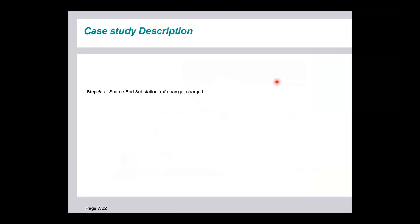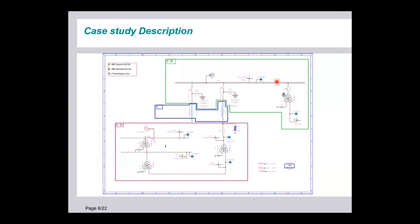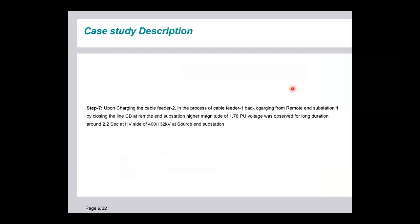The next step: the line CB is already closed. Hence, by closing the remote end breaker, the remote end bus is getting charged. In the next step, source end substation transformer buses are getting charged by closing the respective transformer bus at the remote end. In the next step, it was tried to close a cable feeder — cable one is getting charged. During this process, a huge amount of voltage was developed — around 1.78 per unit — and it persisted for around 2.2 seconds. It was a temporary over-voltage.